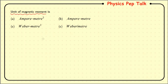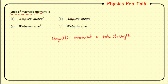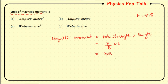Let us look into the next question: the unit of magnetic moment. Magnetic moment equals pole strength into length. Pole strength is defined as force per unit magnetic field. For a charged particle moving in a magnetic field, F = QVB, so pole strength equals QV divided by B. The B cancels and we get Q times V, which relates to current since current I equals charge divided by time, so Q equals I times t.